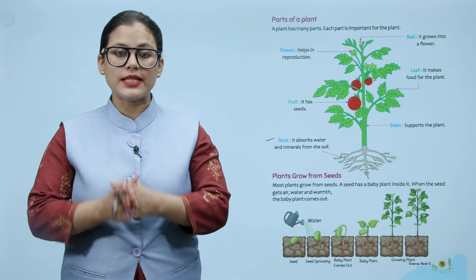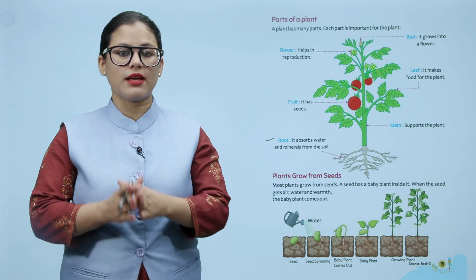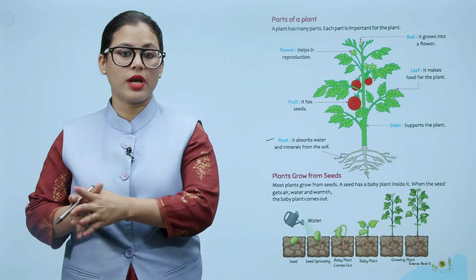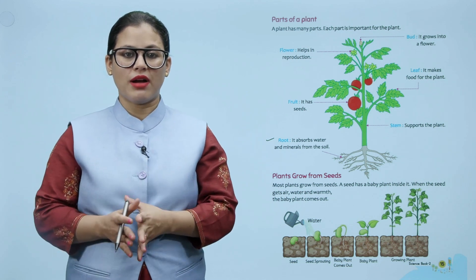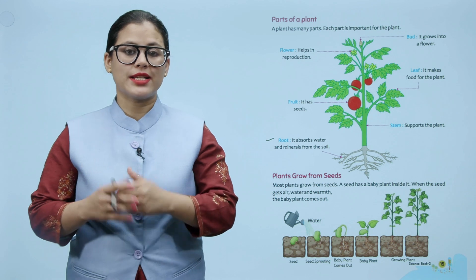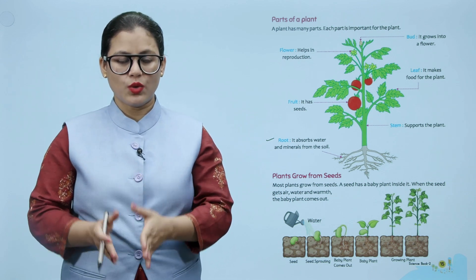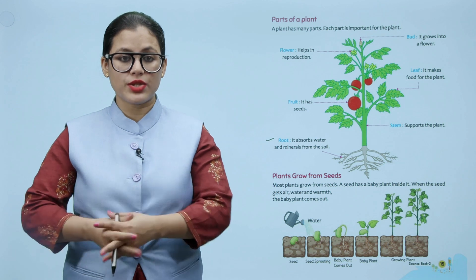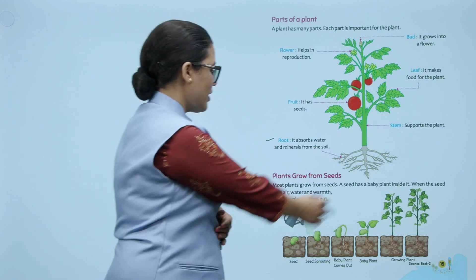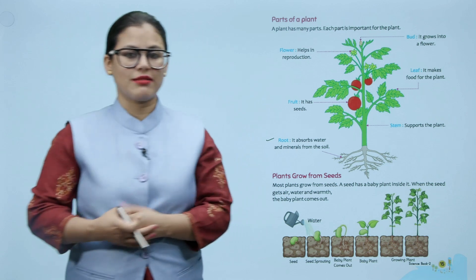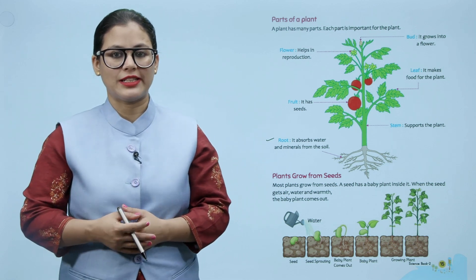Plants grow from seeds. Most plants grow from seeds. A seed has a baby plant inside it. When the seed gets air, water, and warmth, the baby plant comes out. Zyaadatar plants seeds se ugti hain. Seed ke andar ek baby plant hota hai. Jab seed ko favorable conditions milti hain, toh baby plant usmein se bahar nikalti hai. Yeh puri stages dikhaye gaye hain ki seed se kis tarah se new plant nikalti hai.